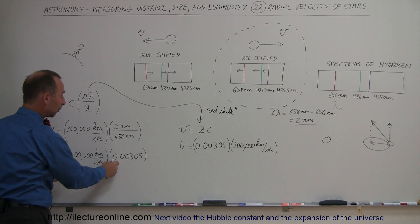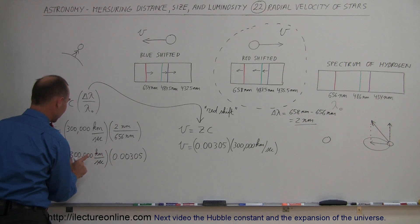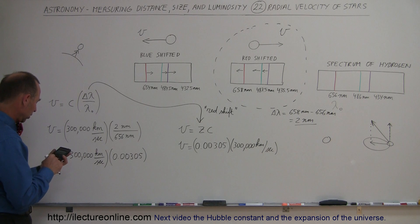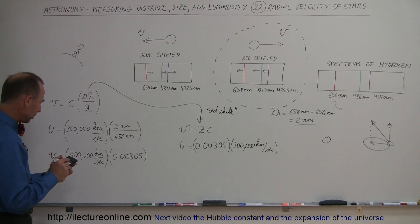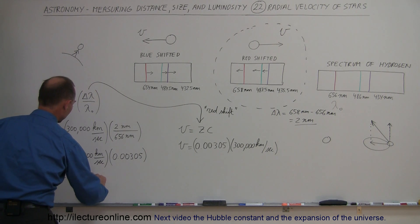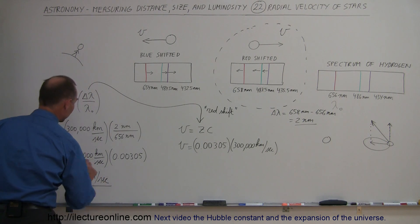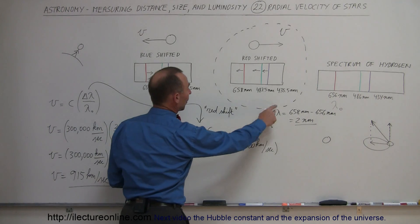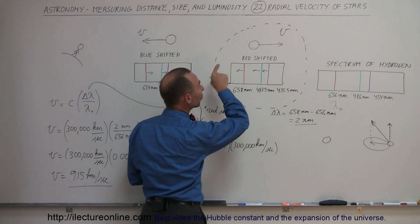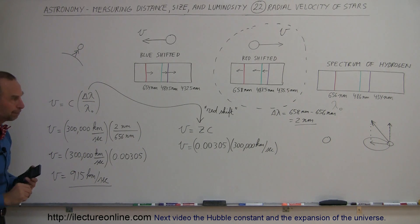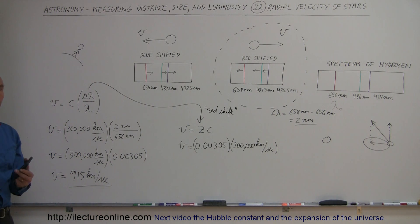If we multiply this times the speed of light, we should be able to get the speed of that star. So, we multiply this times 300,000, and we get 915, so V equals 915 kilometers per second. Oh, no, is it moving towards us? Let's see here. No, the wavelengths are getting longer. That means it's moving away from us, so the object is moving away from us at 915 kilometers per second. So, we call that redshifted.